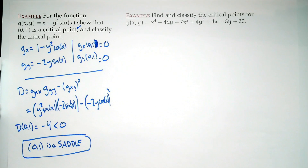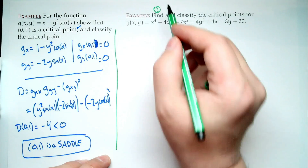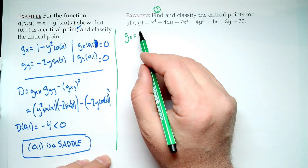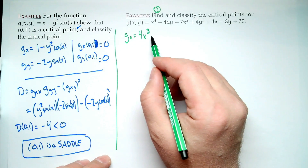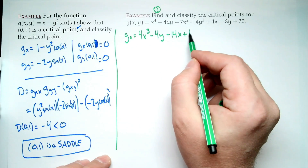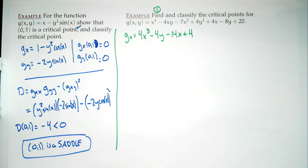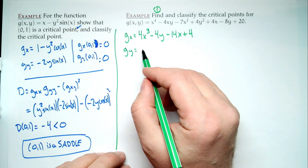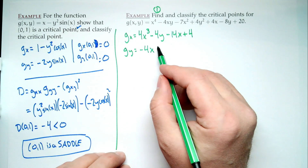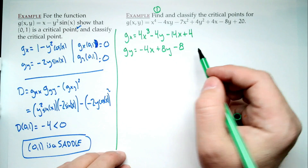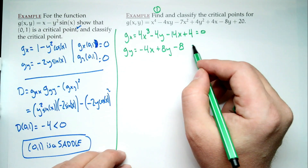Again: find and classify. We start with find, which means setting the gradient to zero. g_x = 4x³ - 4y - 14x + 4 = 0, and g_y = -4x + 8y - 8 = 0.